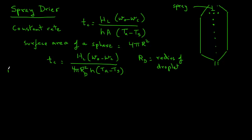Now, it has been determined that the convective heat transfer coefficient can be written as H equals K over RD. So, we can substitute for H in this equation as TC equals HL times W0 minus WC divided by 4 pi RD times KA, in parentheses, we have TA minus TS. So, that is for the constant rate period.